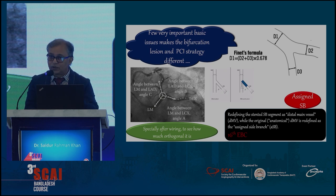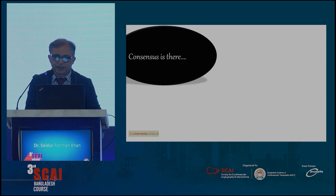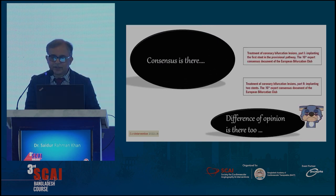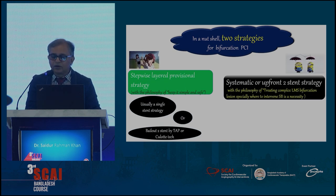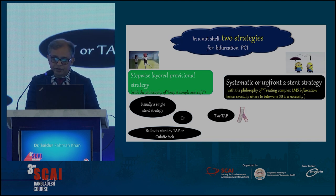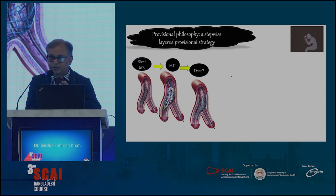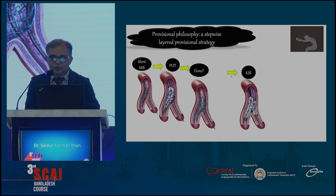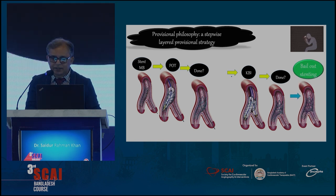PCI strategies are also changing. The consensus is there — the 16th EBC paper is there — and in a nutshell, two strategies exist: the stepwise layered provisional strategy and the systematic upfront two-stent strategy, such as DK crush, culotte, or TAP techniques. The provisional philosophy is what everybody likes and considers best: stent the main branch, then POT, and it is done — or go for a KBI, or go for a bailout two-stent strategy.